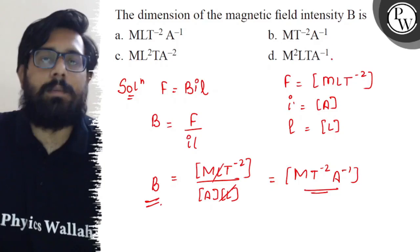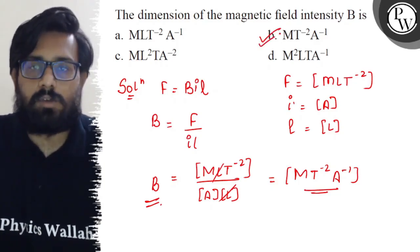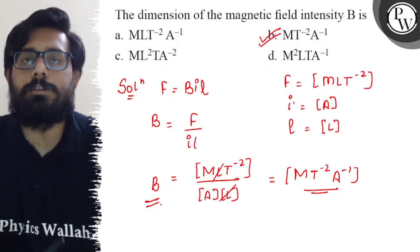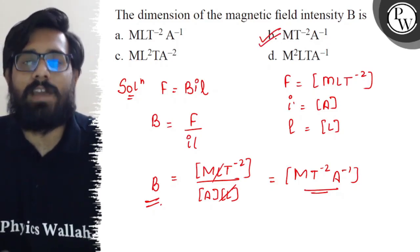This will be your dimension for magnetic field. So this will be your dimensional formula and the dimension for the magnetic field intensity comes out to be MT^-2 A^-1. So your B option is absolutely correct and I hope you got the concept of this question. All the very best.